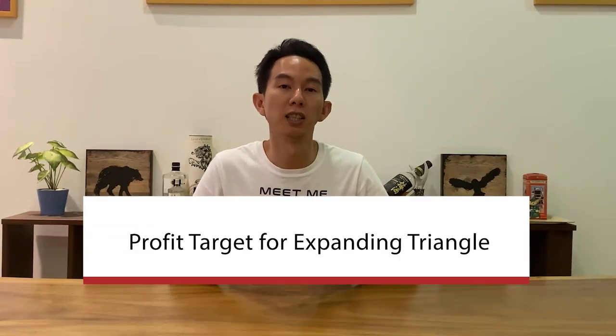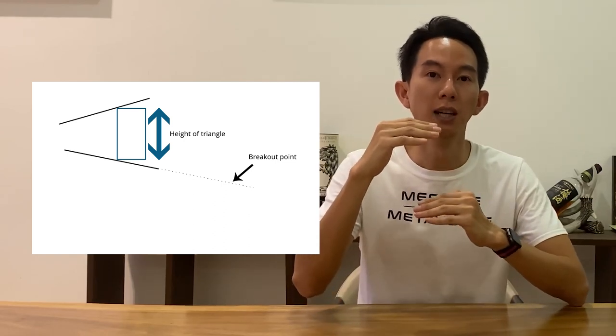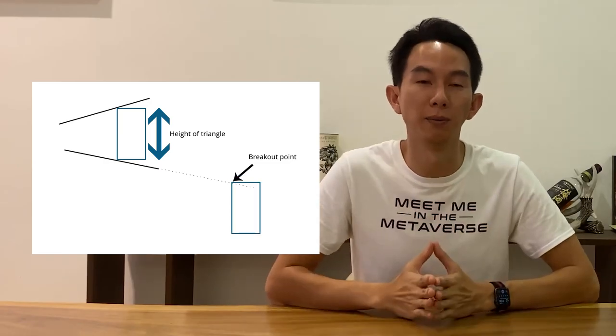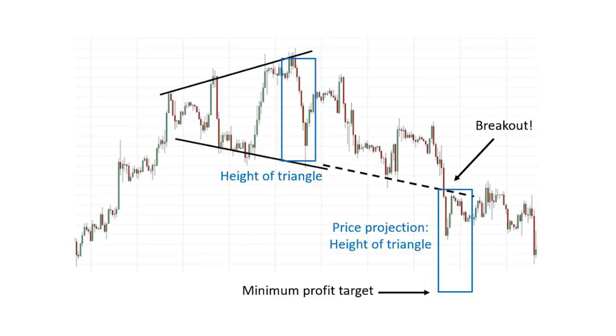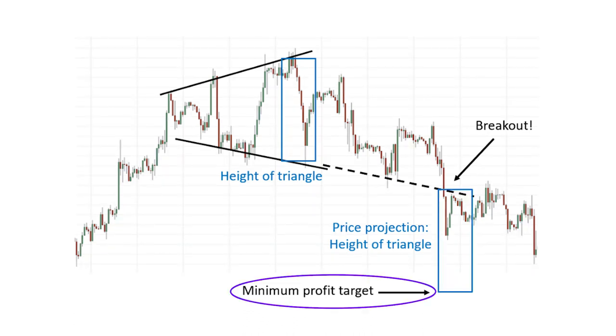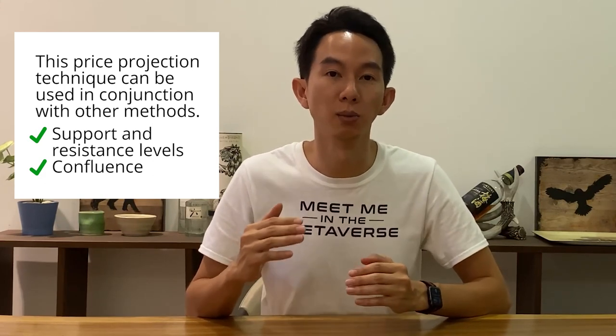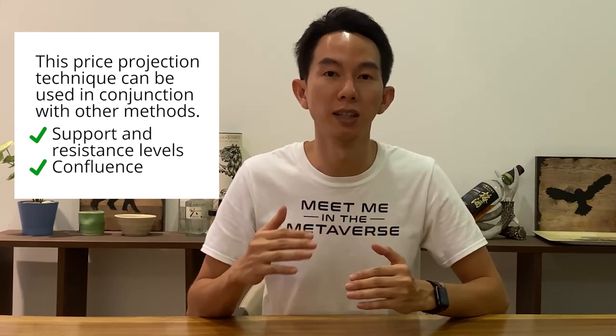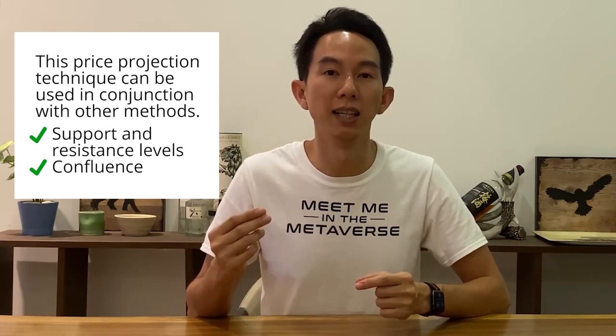How do you get a profit target for the expanding triangle? Once an expanding triangle pattern is completed, one of the most useful things about it is its ability to provide a price projection, which can be used to estimate a minimum profit target for your trade. This is done by taking the maximum height of the triangle and projecting that distance from the breakout point. In the chart above, the maximum height of the expanding triangle is indicated by the blue rectangular box, which is then projected at the breakout point. The black horizontal arrow indicates the price level that serves as the minimum profit target. This price projection technique can be used in conjunction with other methods such as support and resistance levels, and if there is any confluence, it gives an added layer of confirmation.